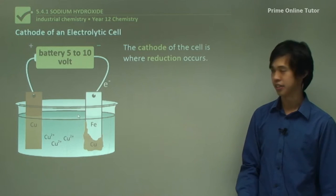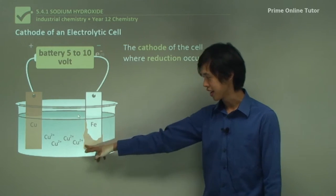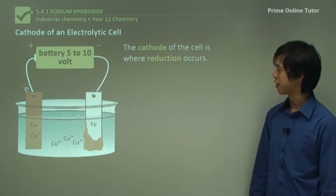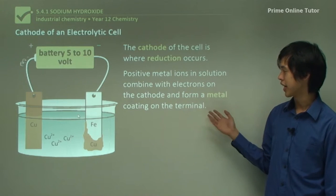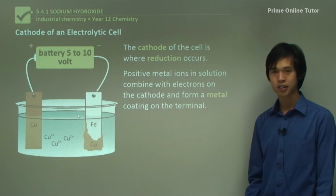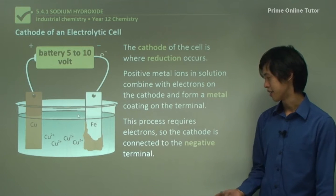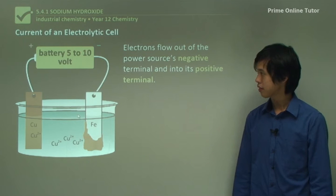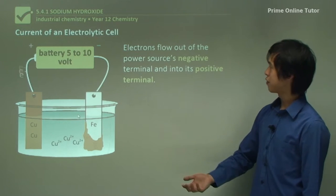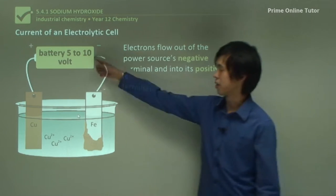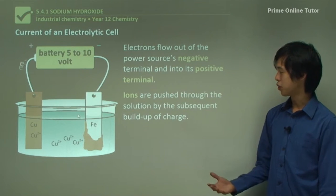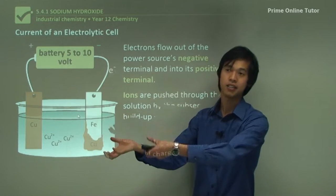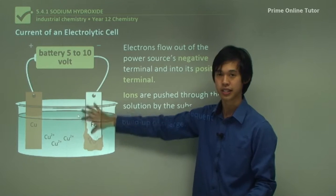The cathode is where reduction occurs — it's where the electrons go. The electrons combine with Cu²⁺ to give Cu metal, which forms on the other side. Positive metal ions in solution combine with electrons on the cathode and form a metal coating on the terminal. The process requires electrons, so the cathode is connected to the negative terminal — because it needs electrons, connecting to the negative terminal will repel electrons toward it. The cell can remove ions from solution.